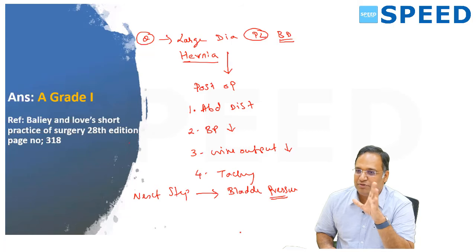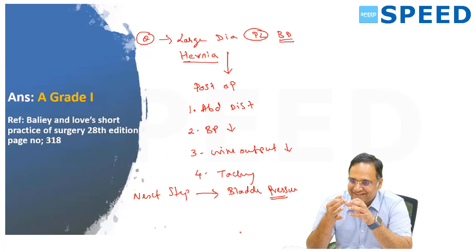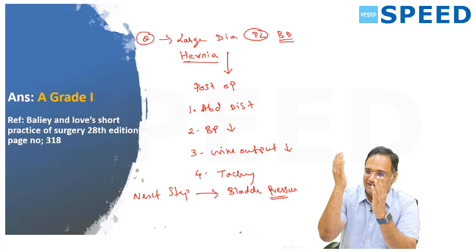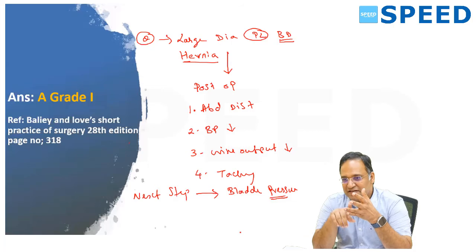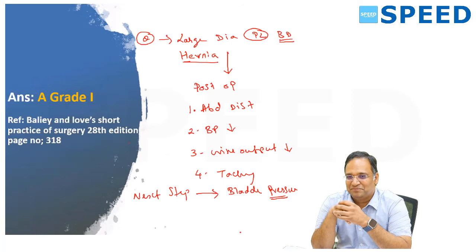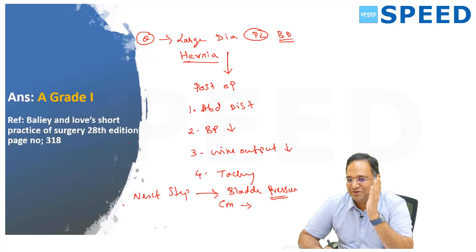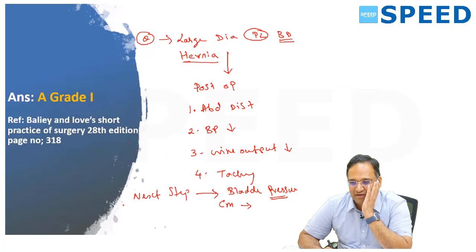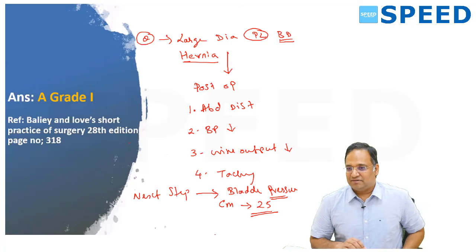To measure bladder pressure, you put a Foley's catheter and insert a saline tube inside, make it straight, take a scale and measure the level of urine — whether it is 10 cm, 15 cm, or 25 cm using an IV set catheter. Anything more than 20 cmH2O is suspicious, but more than 25 cmH2O is alarming and you should start intervening. 25 is the cutoff number.